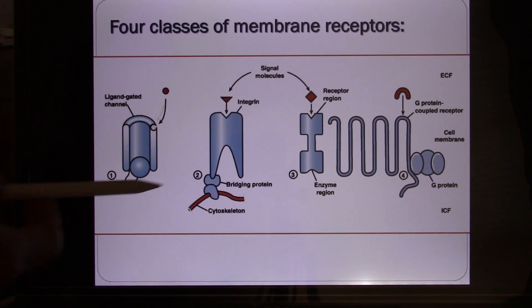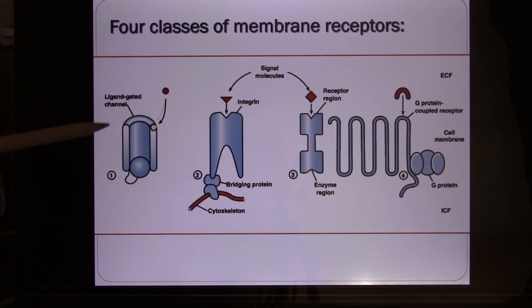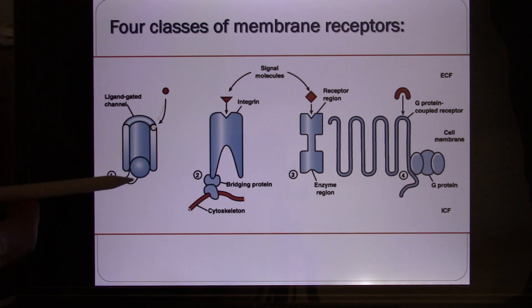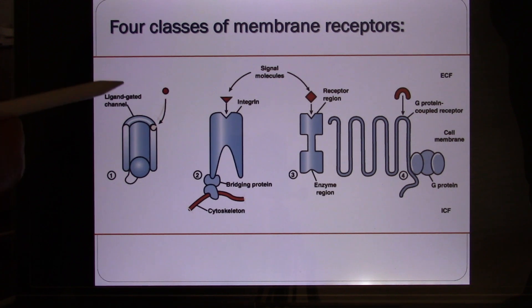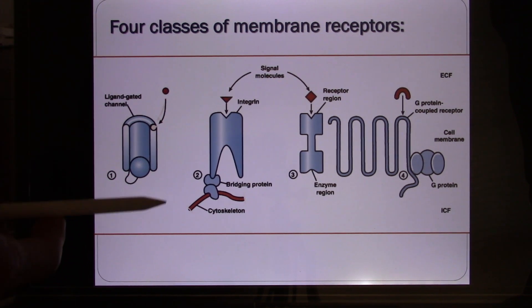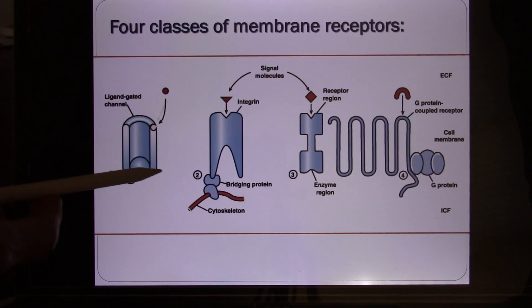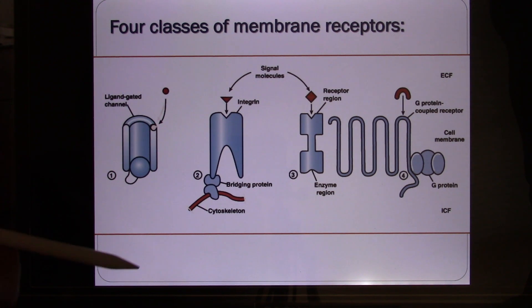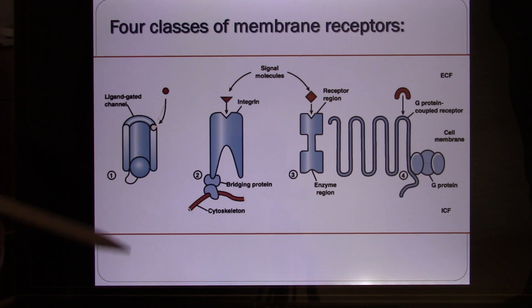If this is the sodium channel, when it opens, sodium can flow through it. Sodium is usually high outside, so it's going to flow into the cell. If this is a potassium channel, potassium is going to flow out, because potassium is high inside.